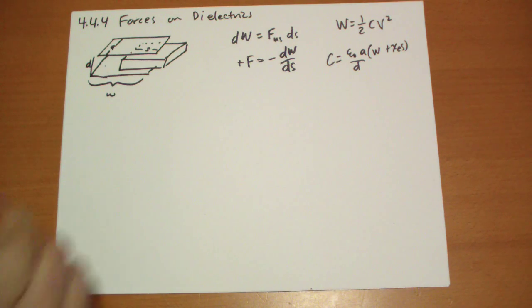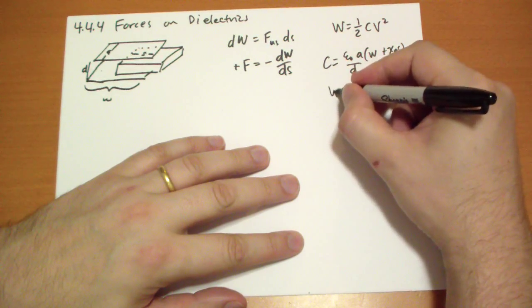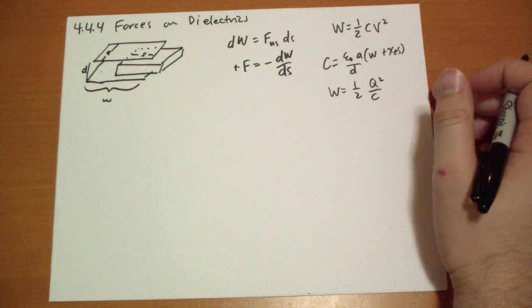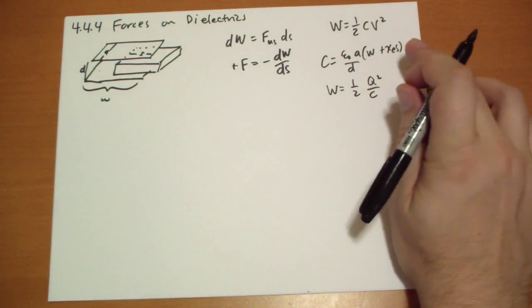Now, as we slide this thing in and out, we could either hold the potential constant, add or subtract charge as appropriate, or we could hold the charge constant. The problem with holding the potential constant is what you're actually doing in order to do that is you have to have a battery hooked up. And as you move that, this bar of dielectric, there's going to be current flowing through that battery to maintain a consistent potential. And we don't want to calculate the amount of work caused by the current flowing, so it's easier just to hold the charge constant. And so we'll use this equation instead. Work is equal to one-half Q squared over C. And we're going to hold the charge constant, and we're going to see how the energy changes as the capacitance changes as S changes.